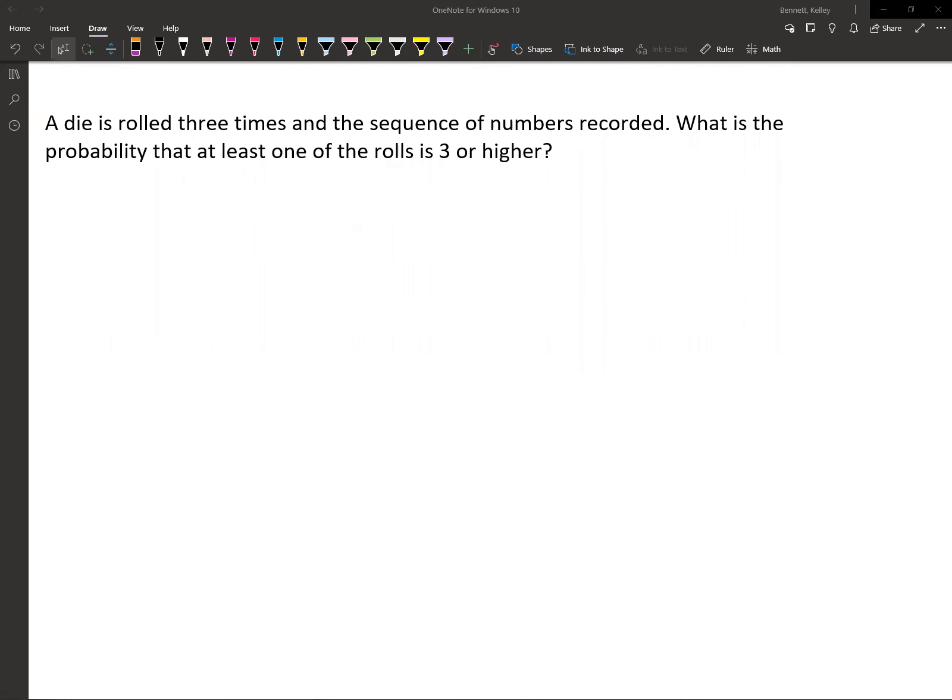In this question, you're going to roll a die three times and record the sequence of numbers, and you want to find the probability that at least one of the rolls is three or higher.